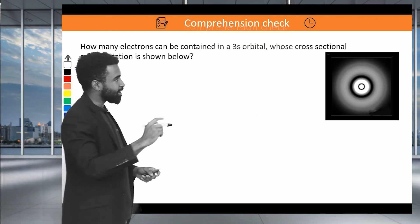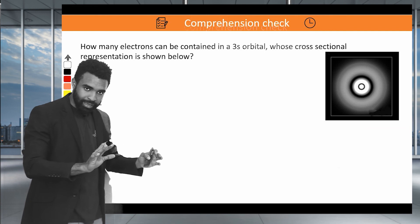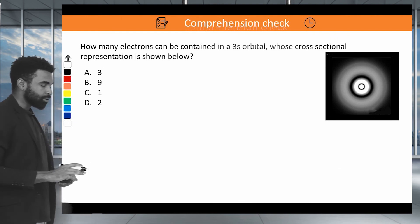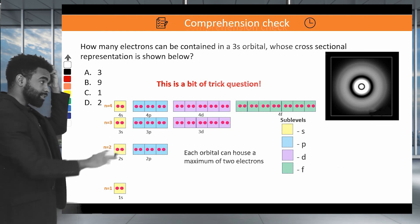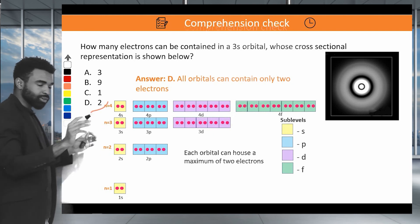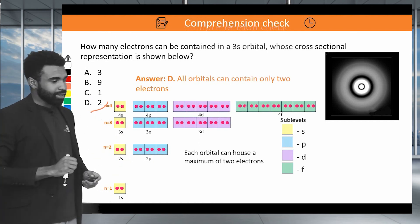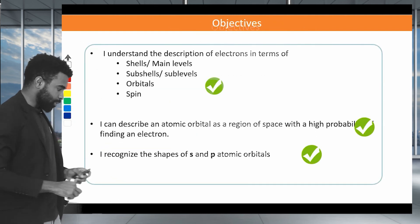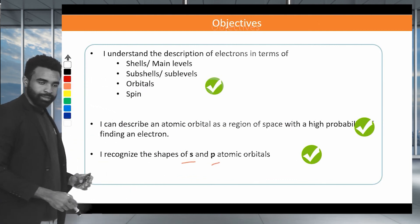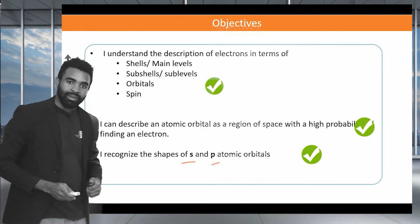How many electrons can be contained in a 3s orbital whose cross-sectional representation is shown? This is a bit of a trick question. The answer is 2 — all orbitals contain only two electrons, whatever the shape, whether simple spheres or complex multi-lobed forms. Any orbital can contain only two electrons. With that, we've covered all the objectives: recognizing S and P orbital shapes, and the four descriptors of an electron. We're done!